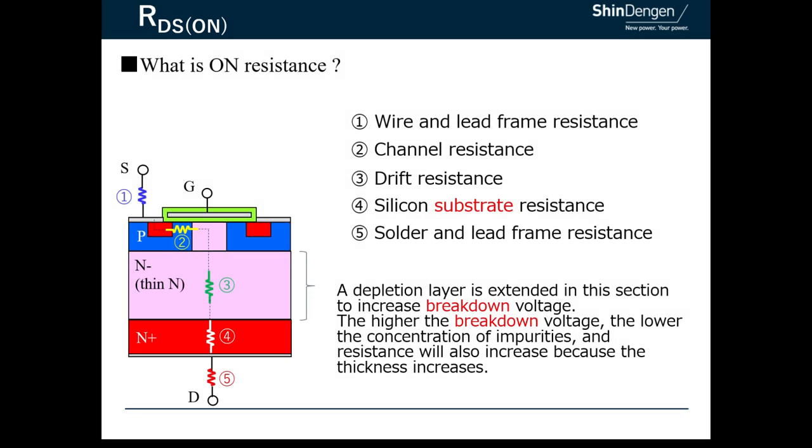RDS(ON) is the resistance between source to drain. The figure shows a cross section of the actual bare die and the breakdown of the RDS(ON). N layers leading to the drain are composed of the two layers three and four in the figure.